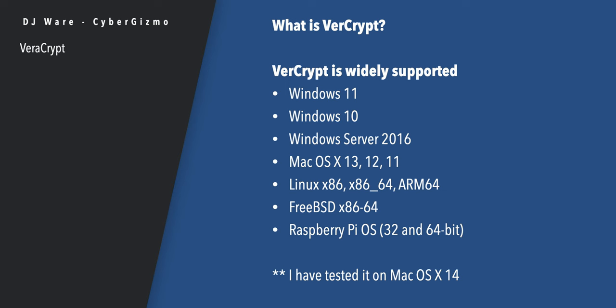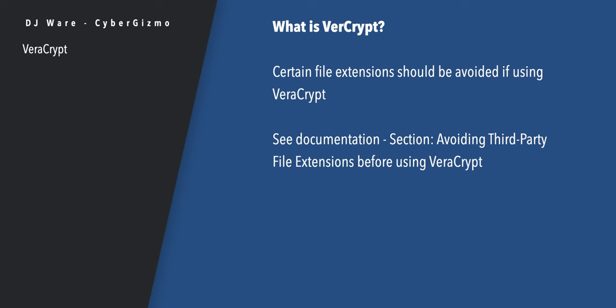VeraCrypt is widely supported. It runs on Windows 10 and 11, Windows Server 2016, macOS 11 through 13 — I tested it with 14 and it seems to work fine. It runs on Linux, either x86 or ARM 64. It runs on FreeBSD 64 and Raspberry Pi OS, either 32 or 64-bit. One limitation to pay attention to: there's a chapter in the manual about avoiding third-party file extensions before using VeraCrypt. Certain software on Windows does direct device access, bypassing the layers VeraCrypt runs in — potentially writing encrypted data directly to the file and causing corruption. Go read that if you're interested in using it on the Windows platform.